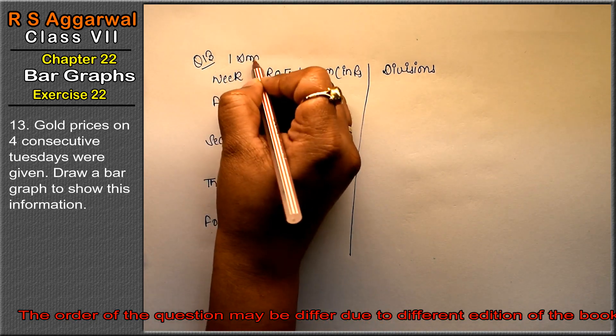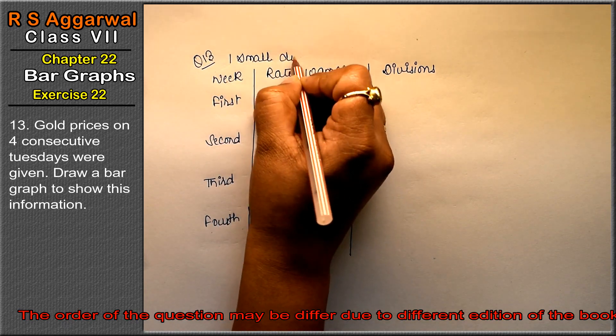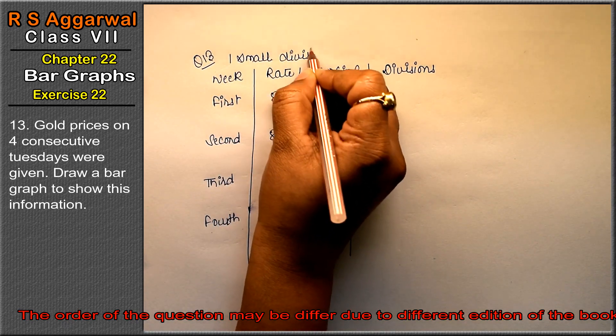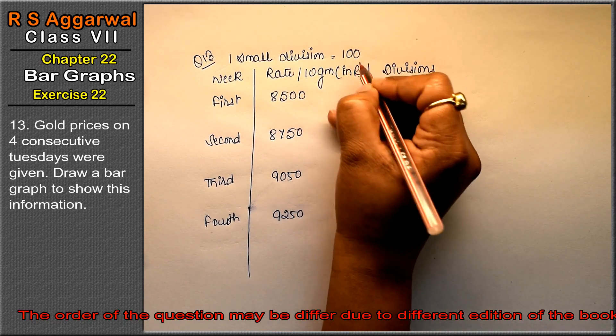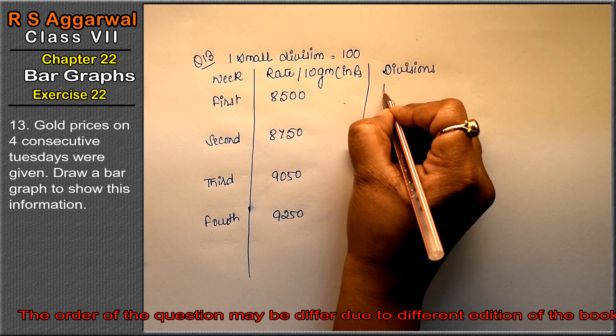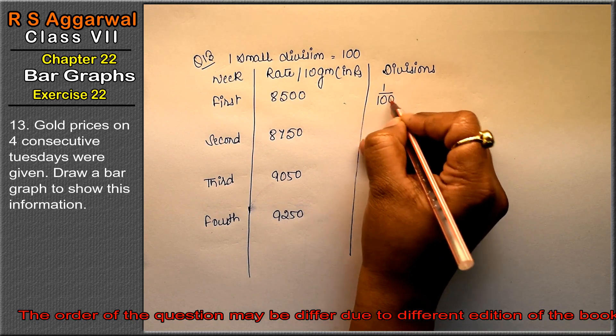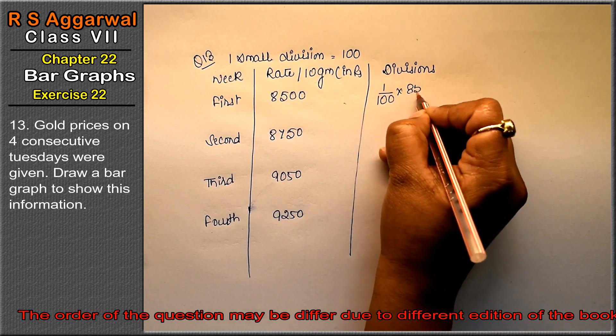So one small division, we have 100. So 1 upon 100 into 8,500, so how much is 85 small divisions?